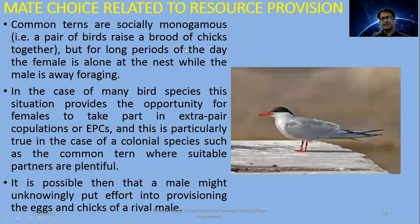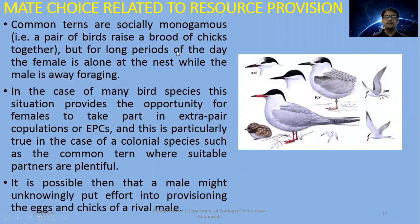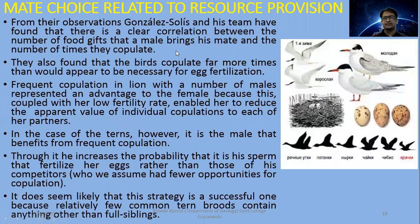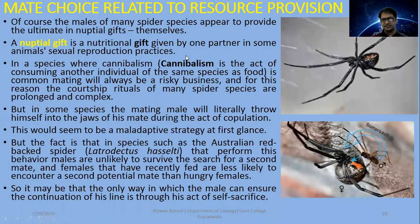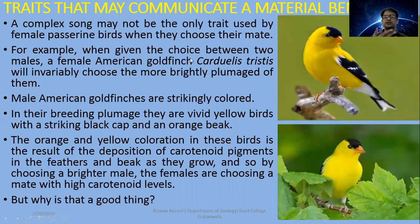Mate choice related to resource provision and food resources was also discussed. We discussed examples involving some birds, spiders, and some nuptial gifts, in which one partner provides a gift to another during mating.